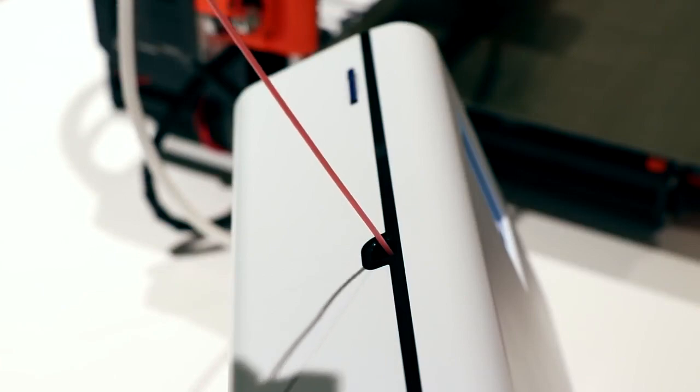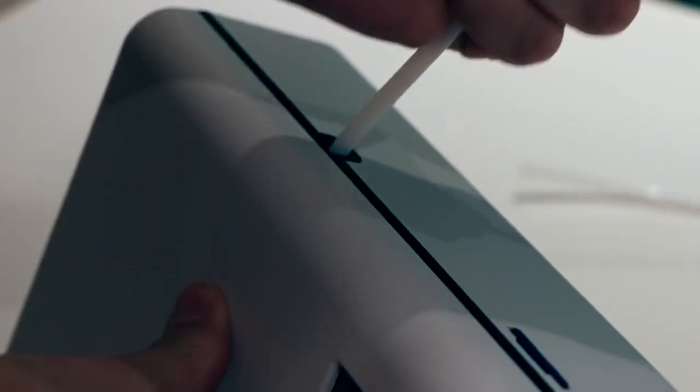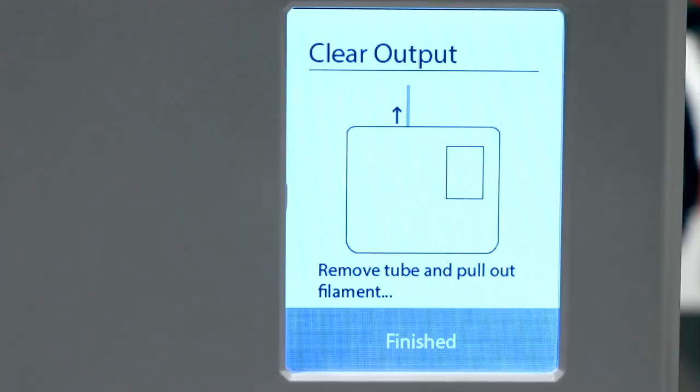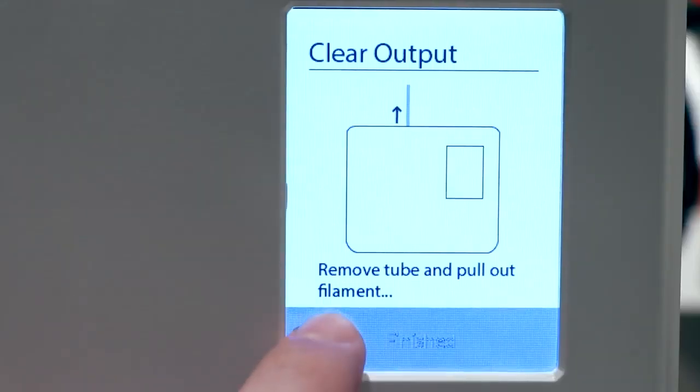Now that we've removed the filament, we can replace the outgoing tube and put it back into the Palette 2. Now that we've completed this, we select Finish on the screen.